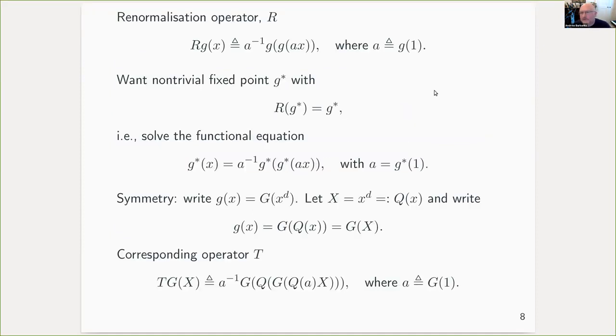So we have this renormalization operator R and we would like to find a fixed point of it. In other words, we would like to solve this functional equation for the unknown function G star. If we think for a while we realize that we can impose a symmetry, so we could write a function as some other function capital G of capital X, which is X to the power d in this case, and we can write down the corresponding operator. So our operator R, written in terms of this function capital G, we can write it as this operator T. So we can work with this symmetry reduced representation, and now it's a fixed point of T that we would like.